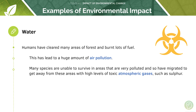Humans have cleared many areas of forest and burnt lots of fuel, and this has led to a huge amount of air pollution. Many species are unable to survive in areas that are very polluted and so have migrated to get away from these areas with high levels of toxic atmospheric gases such as sulfur. So pollution is also another example of an environmental impact.